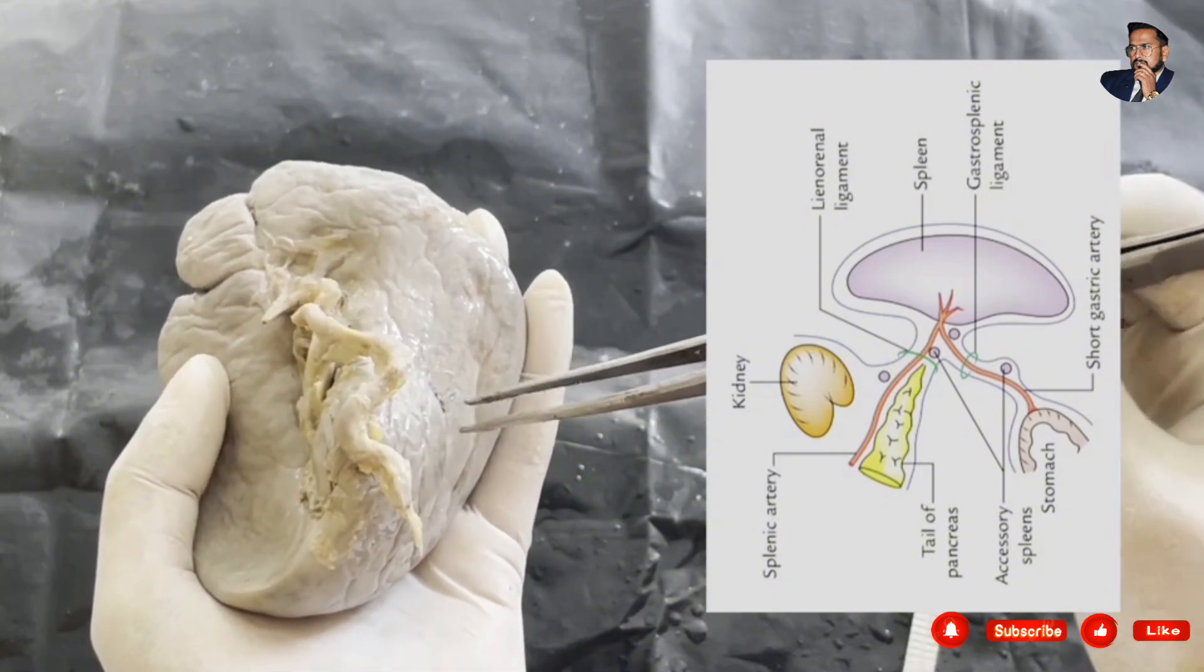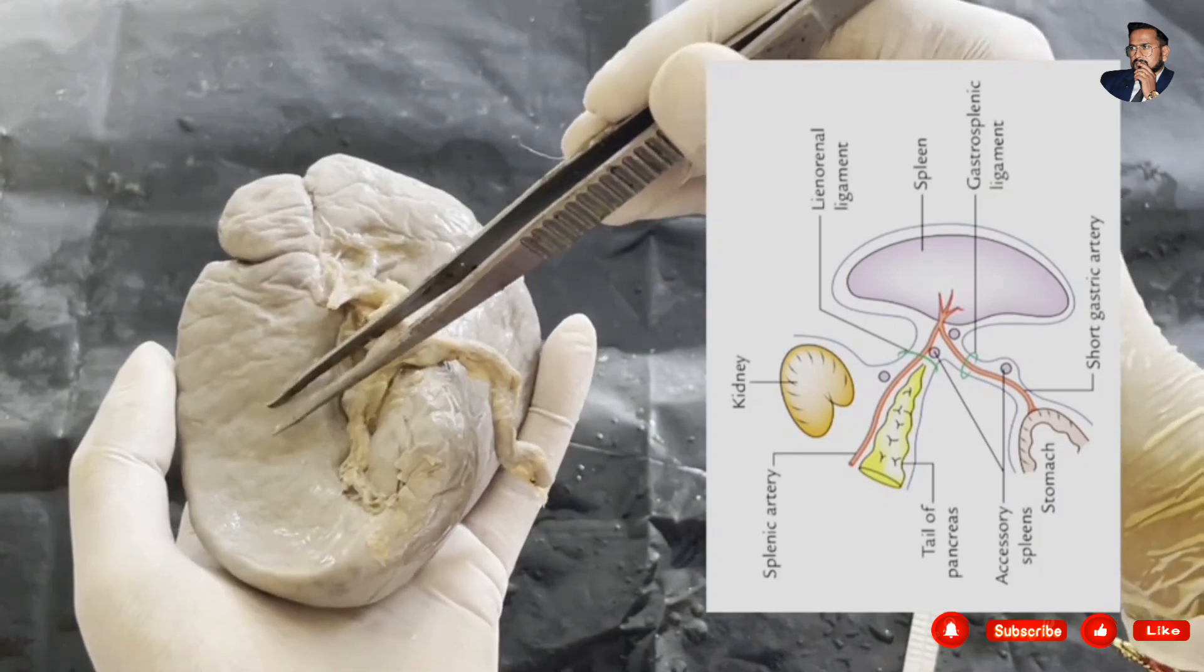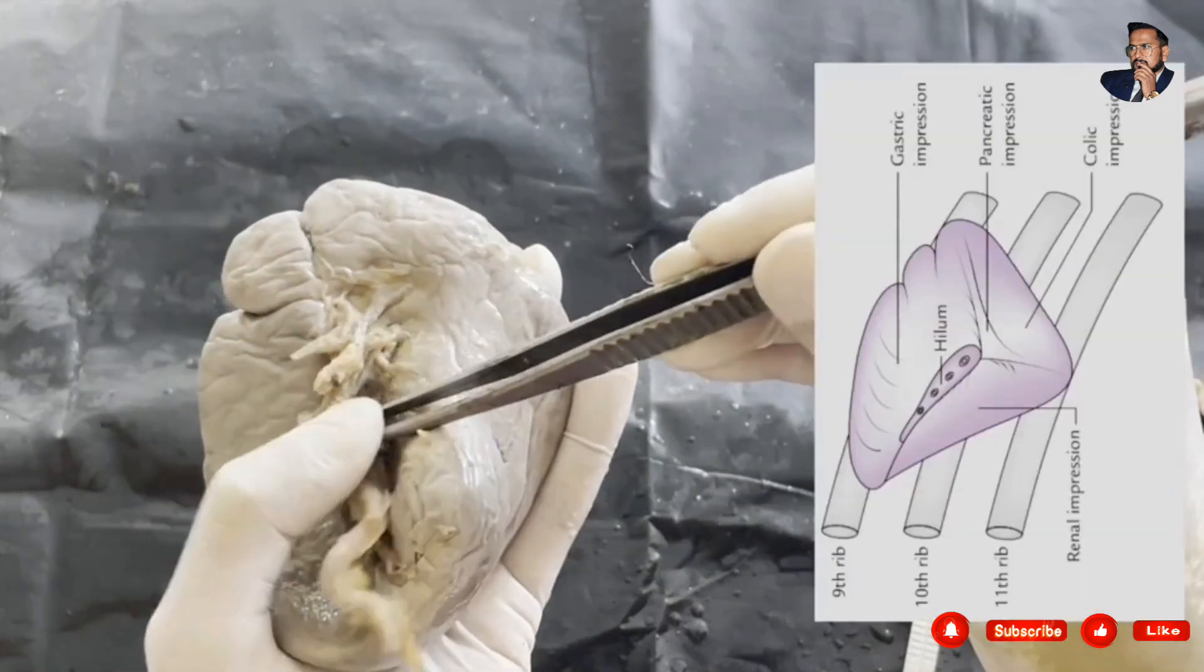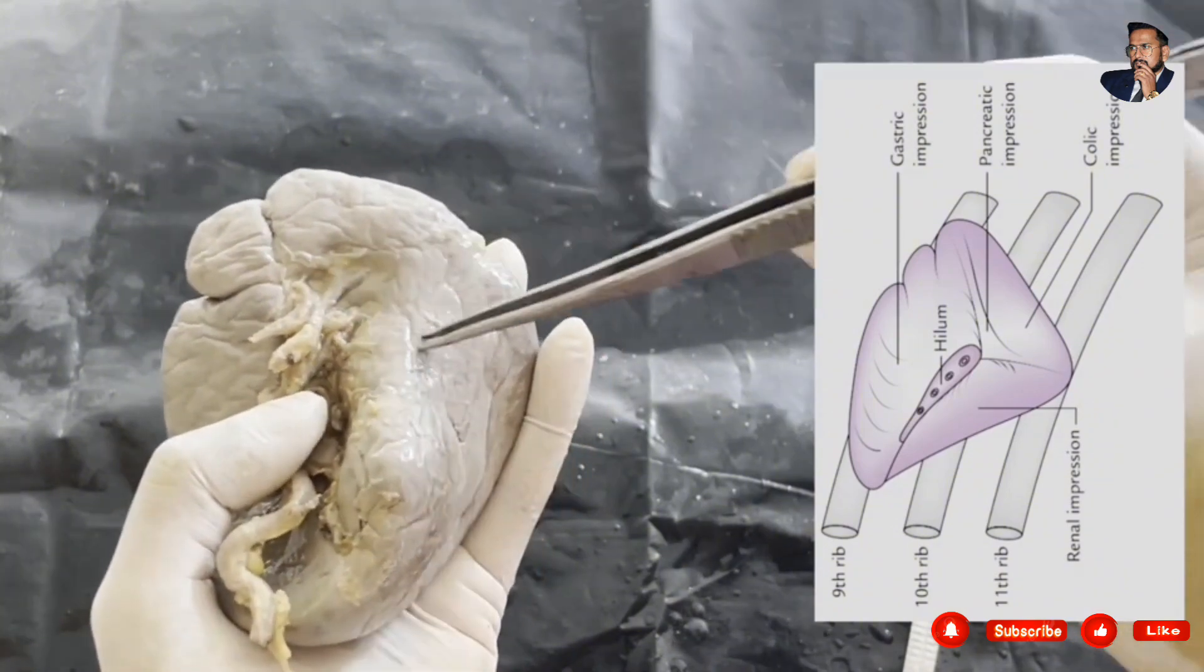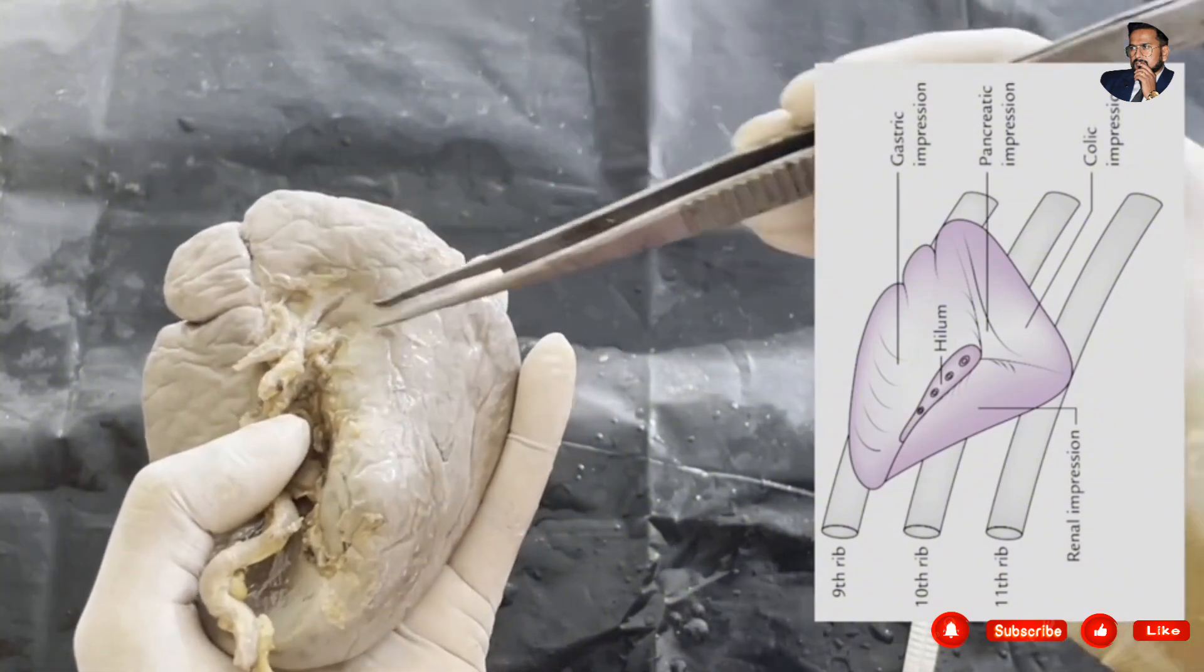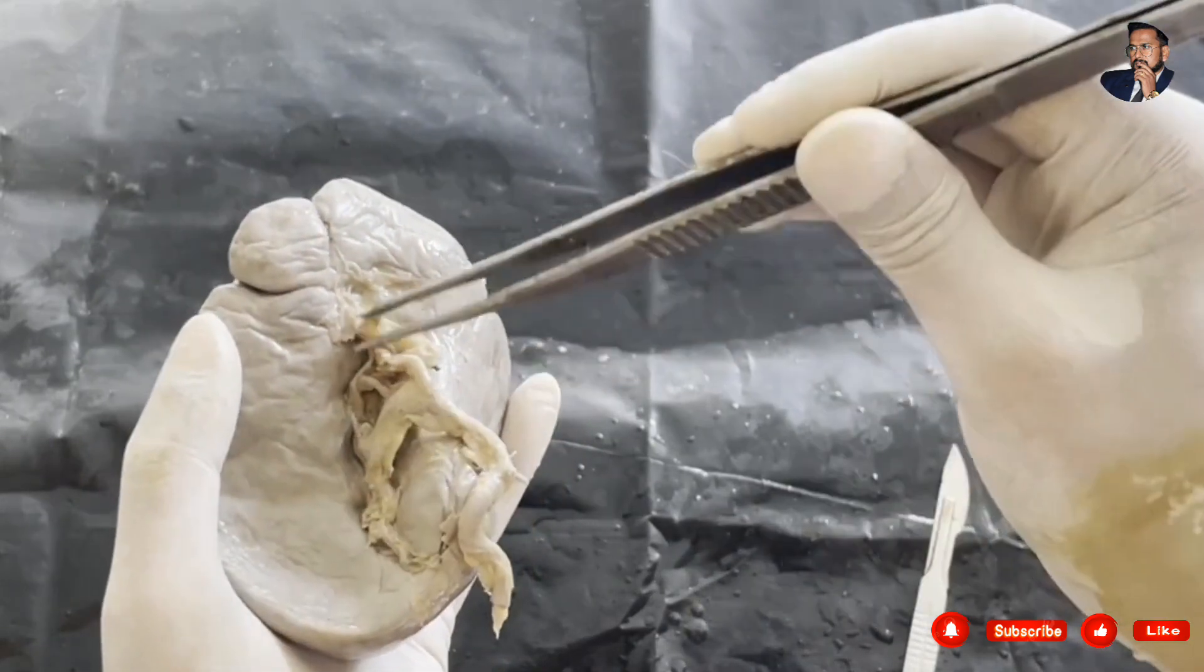There is gastric impression, related with the stomach with the help of gastrosplenic ligament. In this area there is pancreatic impression, related with the tail of pancreas as well as with the colic impression for the left colic flexure.